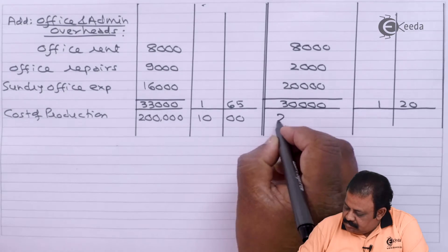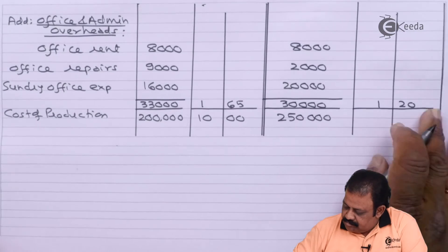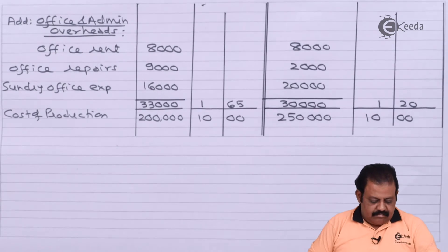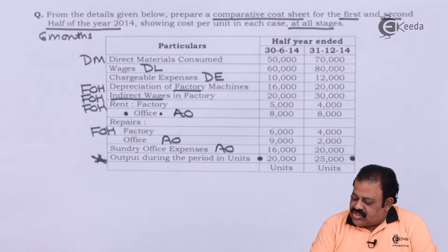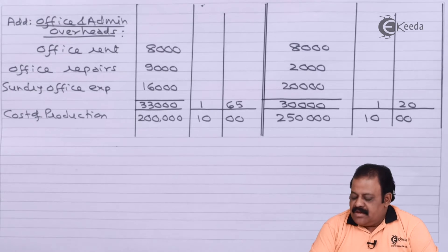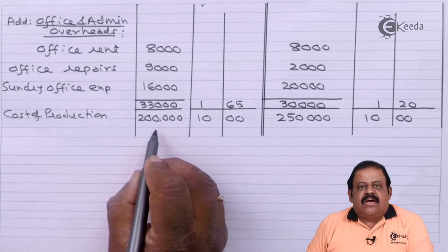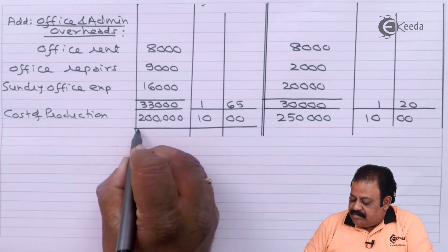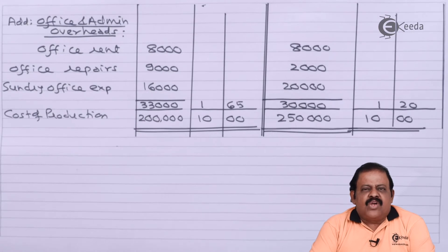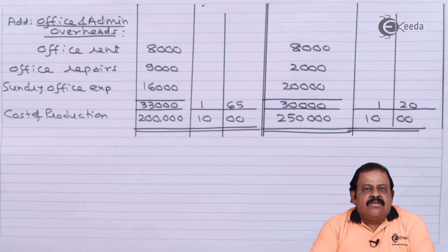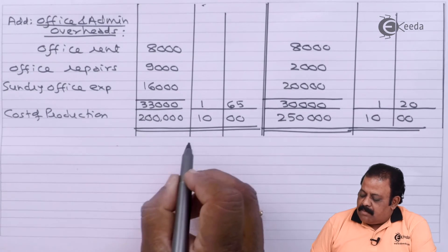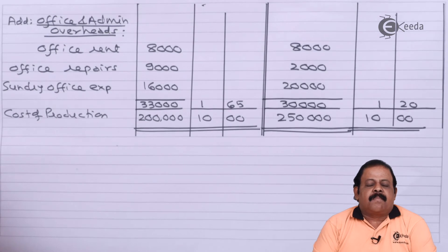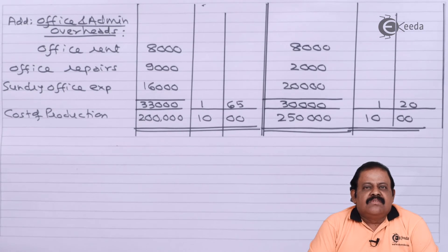We have considered all items of the cost sheet. They have not given the sale price. If we compare cost of production: first half it is ₹2,00,000 and second half ₹2,50,000. Per unit it is the same — ₹10 — because some elements of cost increased in the second half and some decreased, so at the end of the year the cost of production per unit remained the same at ₹10 for both halves.